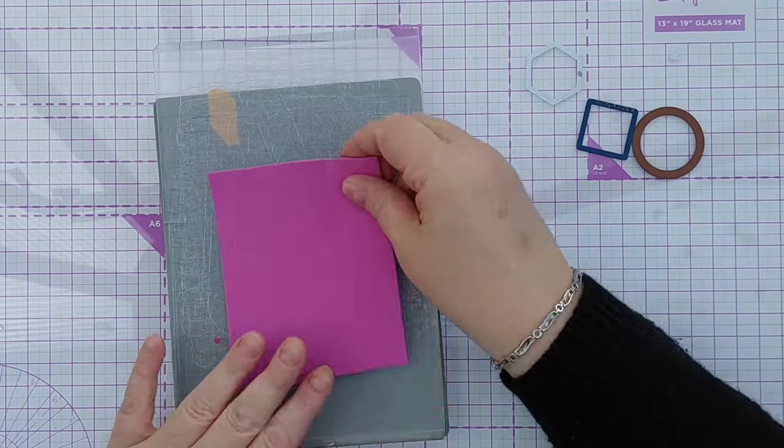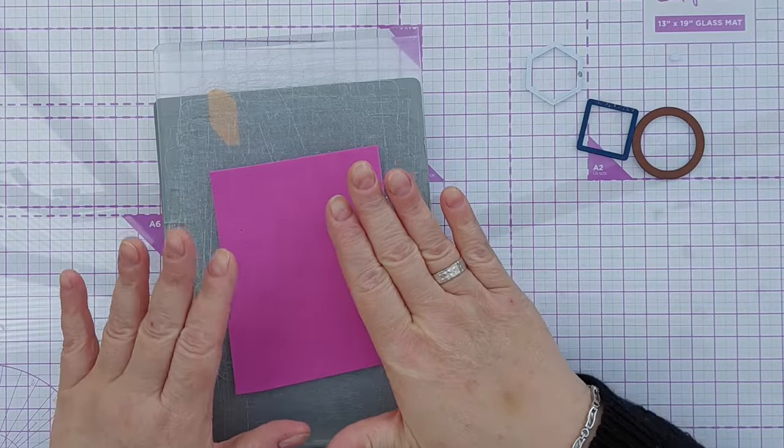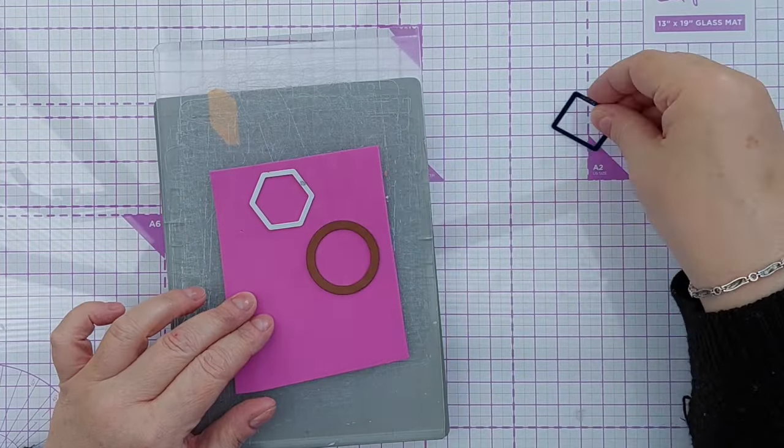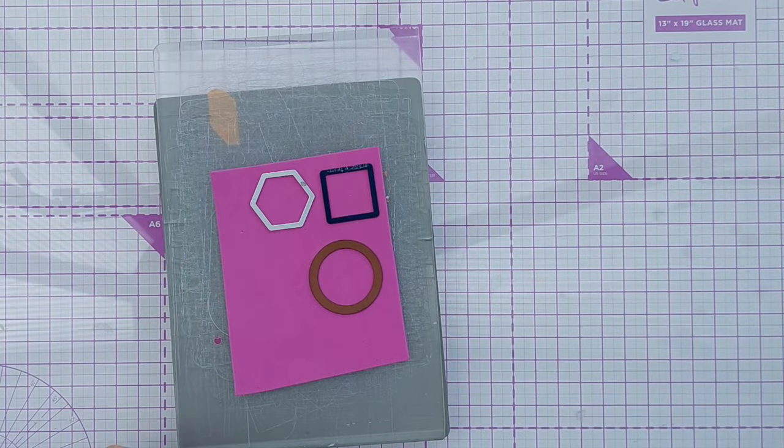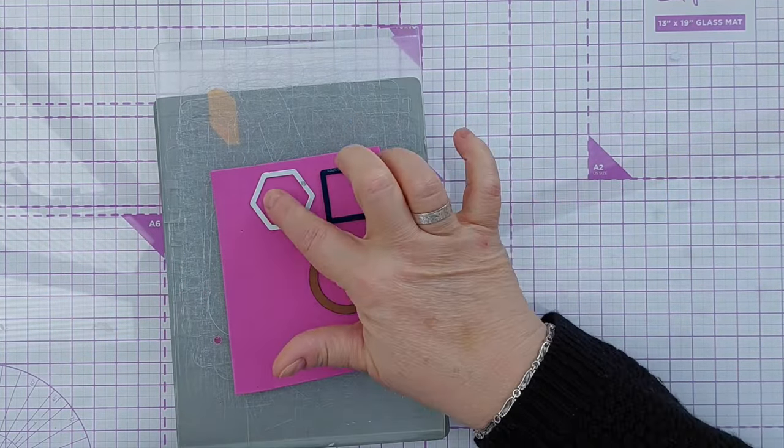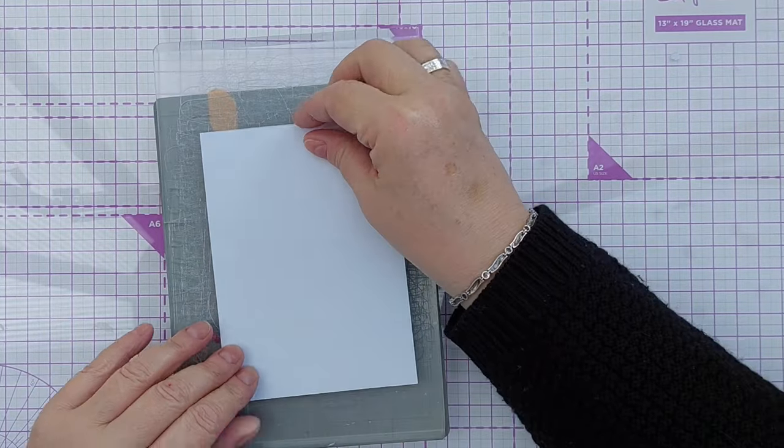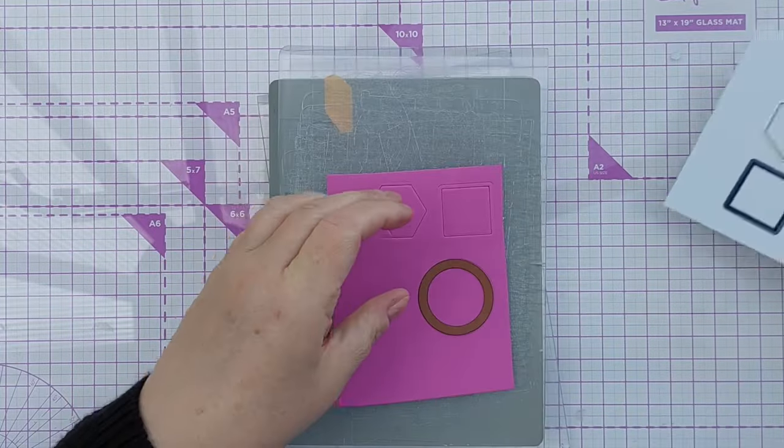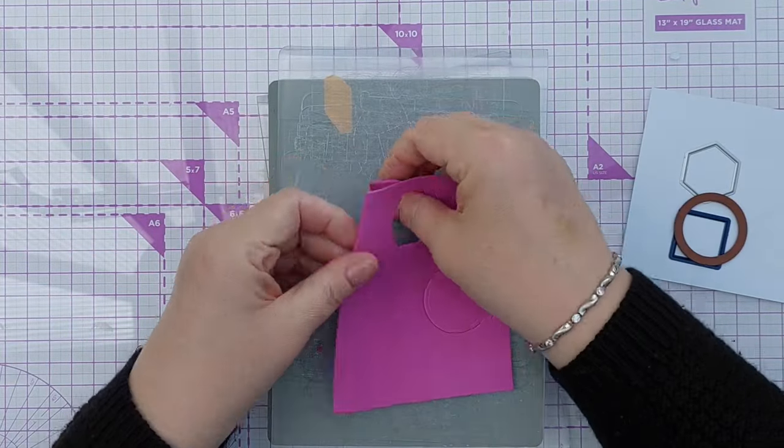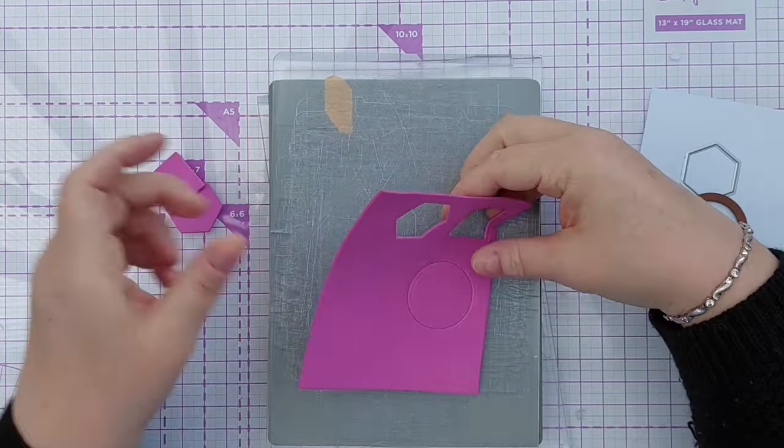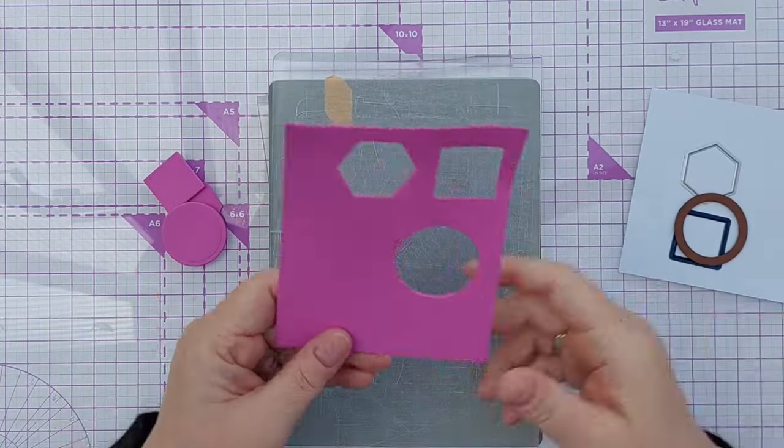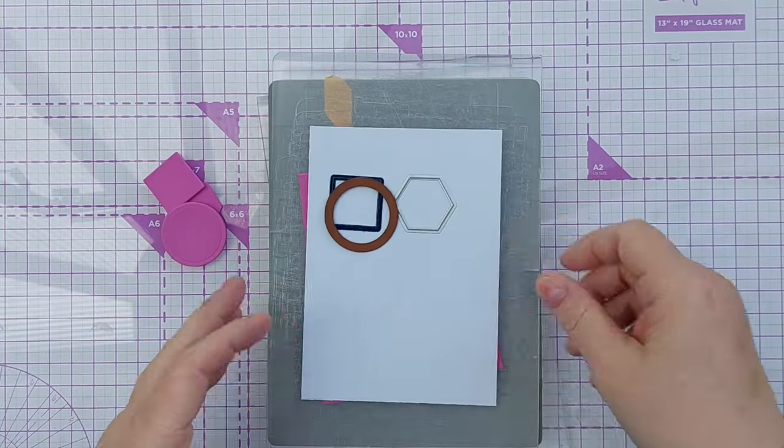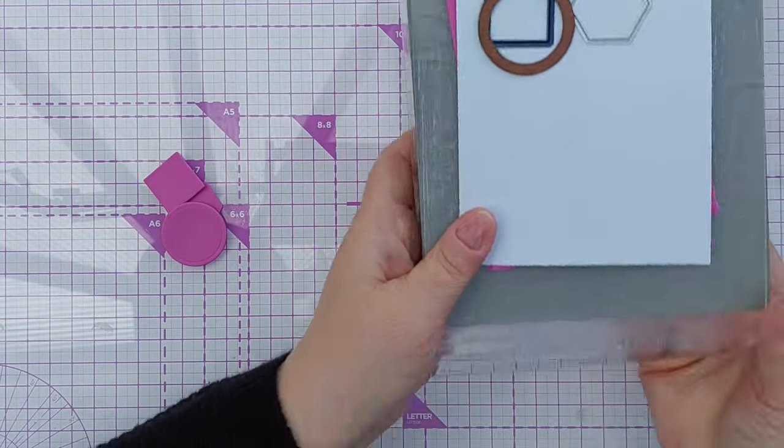So all I'm going to do is take my fun foam, put it on my die cutting plate, add my simple geometric die shapes on top, put a bit of card on top to protect this area of foam, then add the plate and run it through my die cutting machine. And we should have some shapes cut out of fun foam. You can even buy pre-cut fun foam shapes. Look in the kids section of your local craft store.